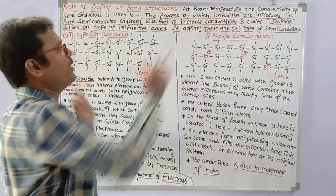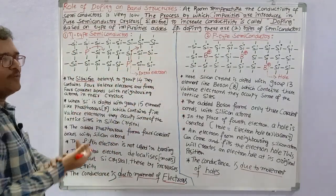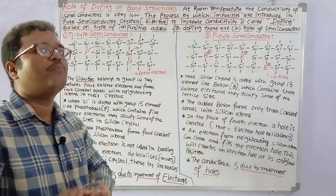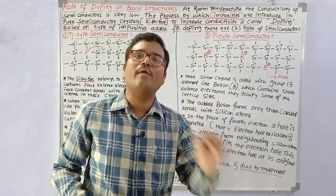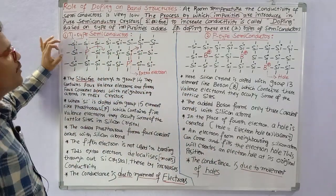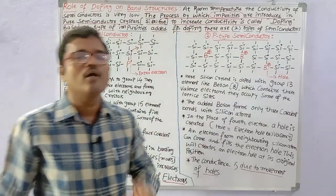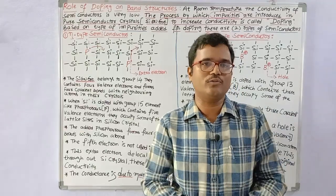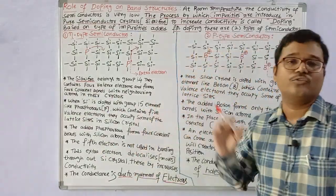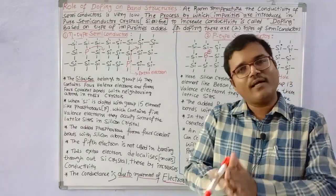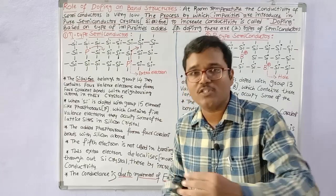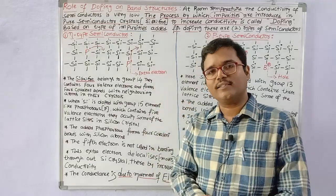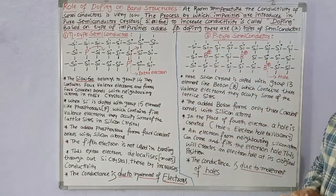Doping is a process in which we add impurities to the pure silicon crystal or pure germanium crystal, which results in increased conductance. There are two types of doping: N-doping and P-doping. Based on the type of impurities added, we can get two types of semiconducting materials — N-type semiconductors and P-type semiconductors.